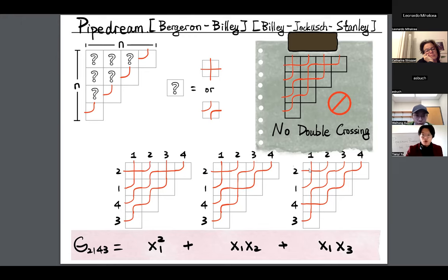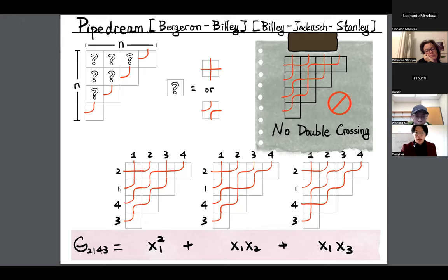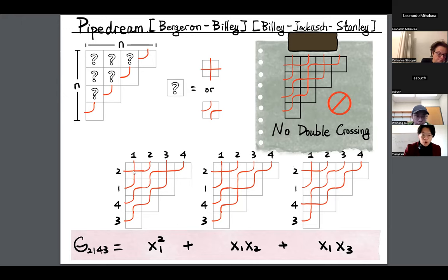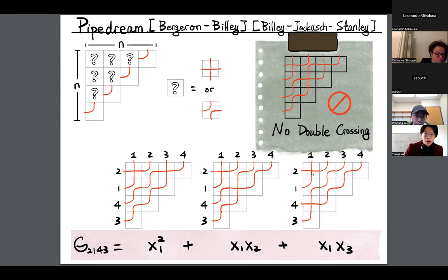To compute the Schubert polynomial of 2143, I find all pipe dreams of 2143. Each pipe dream gives a monomial: a crossing in row i gives you x_i. So here I have x_1 times x_1, that's x_1 squared; here I have x_1 times x_2; and here x_1 times x_3. The last step is to add them all up — that's the Schubert polynomial of 2143.